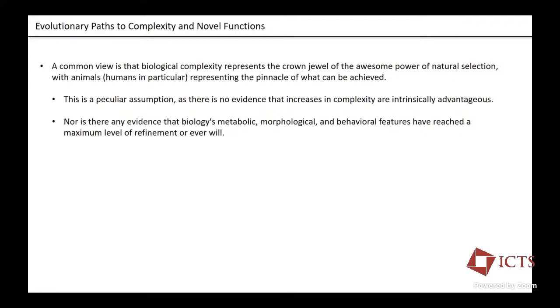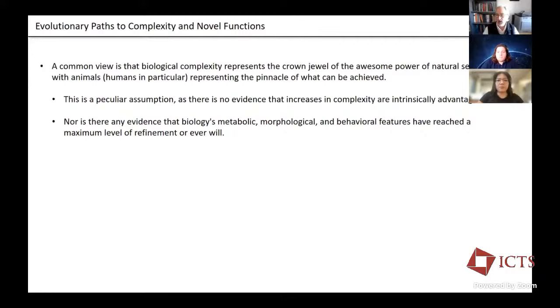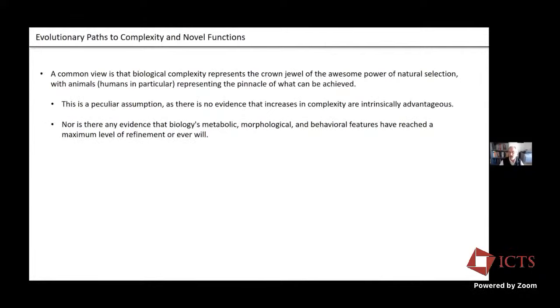Today's talk is focused on thinking about the origins of complexity and novel functions in different orders, particularly in eukaryotes. It's a common view among most biologists that complexity is a good thing, and biological complexity represents the crown jewel of the awesome power of natural selection, with animals, humans in particular, representing the pinnacle of what natural selection can accomplish. This is kind of an odd way to think about things, as far as I know there's no evidence that increases in complexity are intrinsically advantageous. You might have read Darwin or Richard Dawkins, who is a hardened adaptationist. These are potentially giving you somewhat jaded views of how the evolutionary process works.